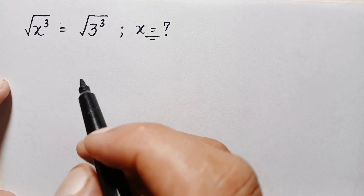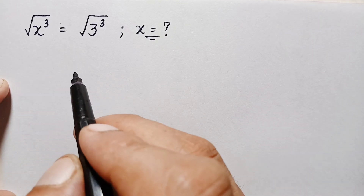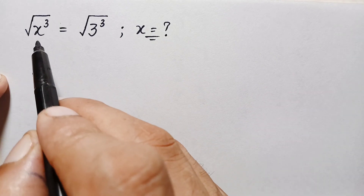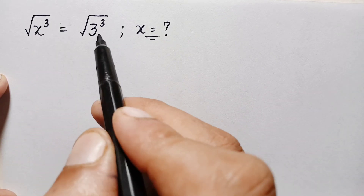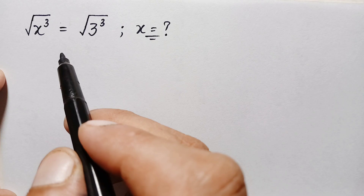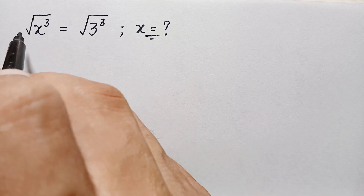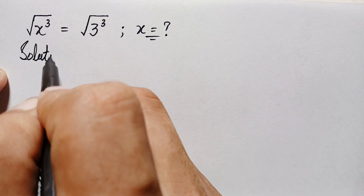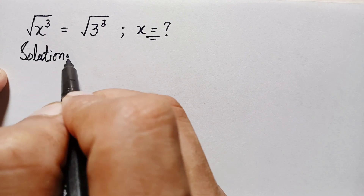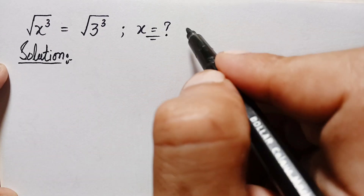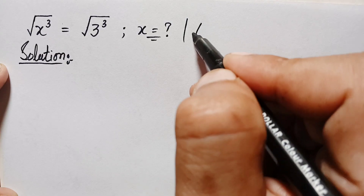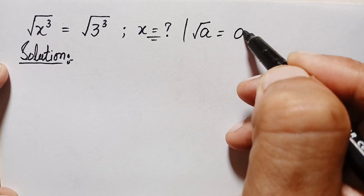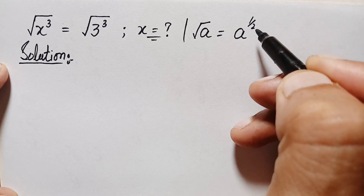Hello everyone, welcome. We will solve this beautiful square root algebra math problem: the square root of x cubed is equal to the square root of 3 cubed. First of all, we can write any number in radical form — the square root of a can also be written as a raised to the power 1 over 2.